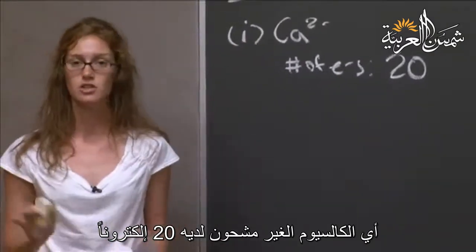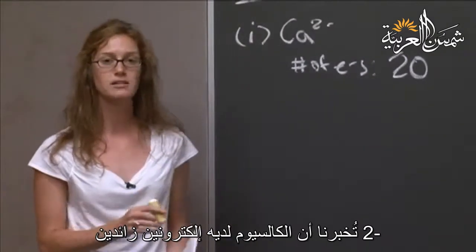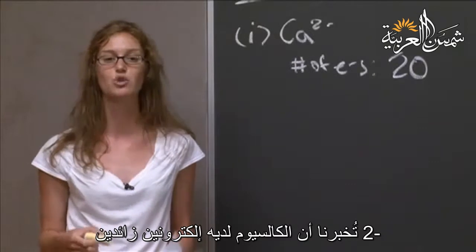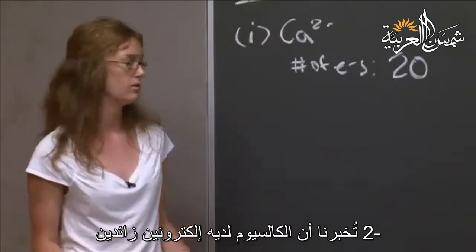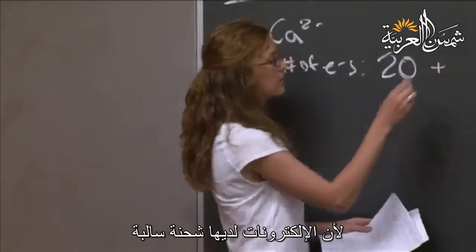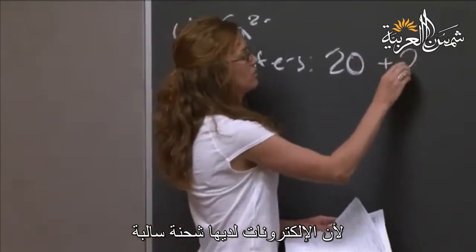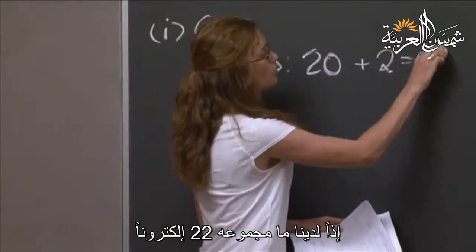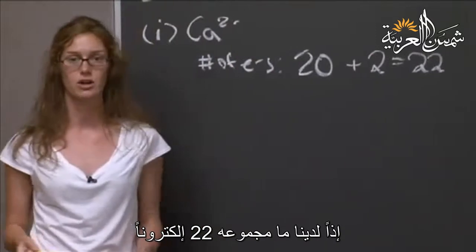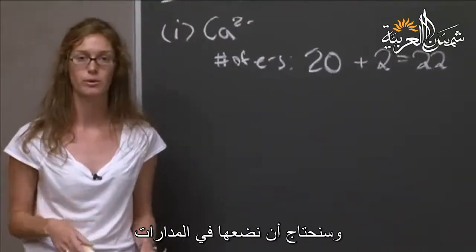So calcium with no charge has 20 electrons. But 2 minus tells us that it has two extra electrons, because electrons have a negative charge. So we have a total of 22 electrons that we need to assign into orbitals.